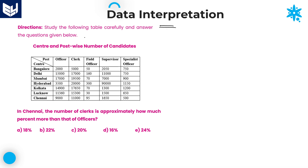First of all, we need to read the information which is given in the table. After that, according to that, we need to solve the problems. If you observe carefully, here the information is about center and postwise number of candidates.